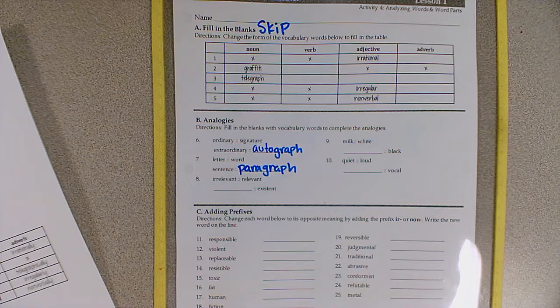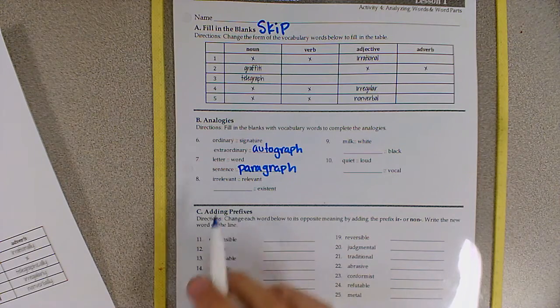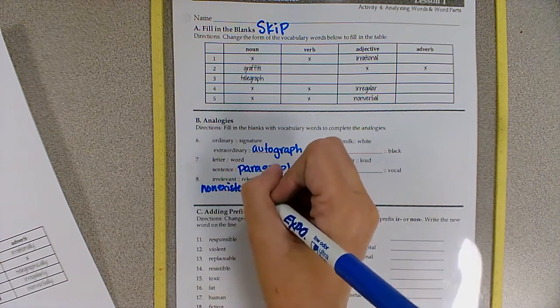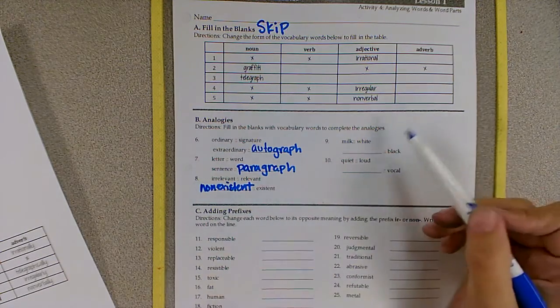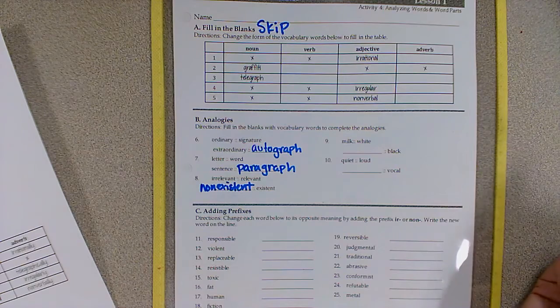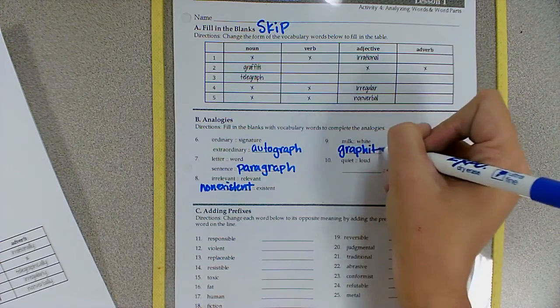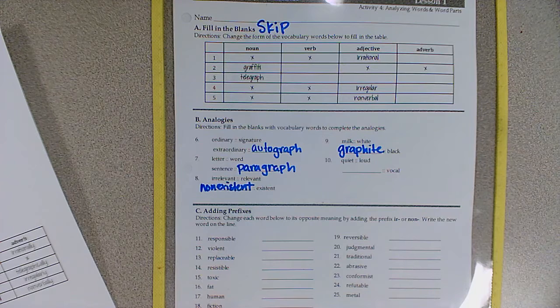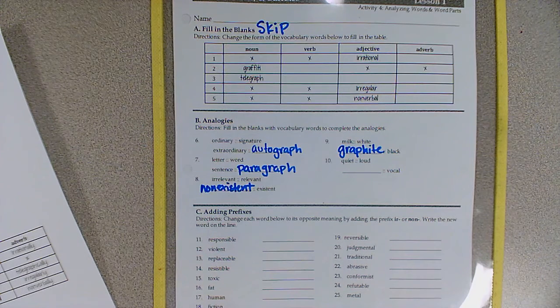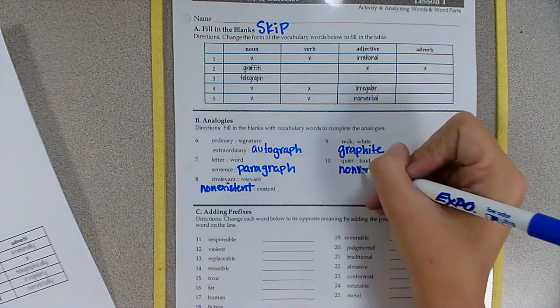Number eight, irrelevant is to relevant as blank is to non-existent. So irrelevant is the opposite of relevant, and non-existent is the opposite of existent. Number nine, milk is to white as blank is to black. Milk is white, and graphite is black. And number ten, quiet is to loud as blank is to vocal. The way I think about it is quiet is the opposite of loud. The opposite of vocal could be non-verbal.